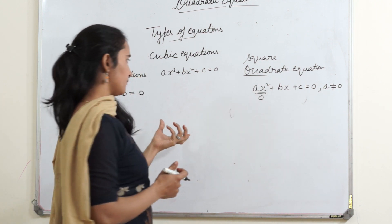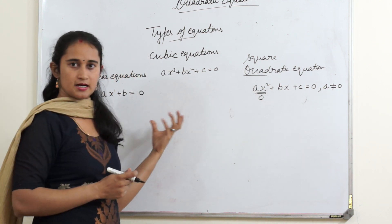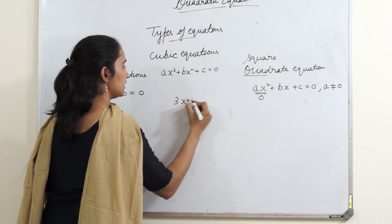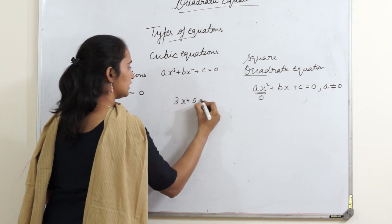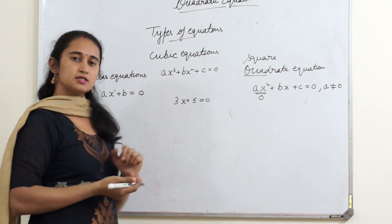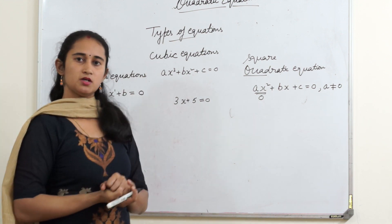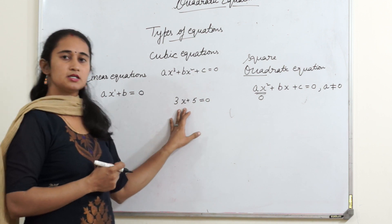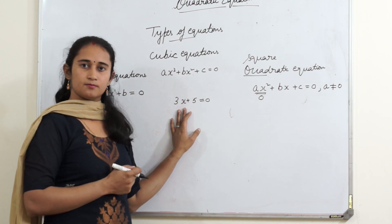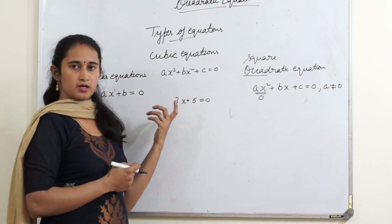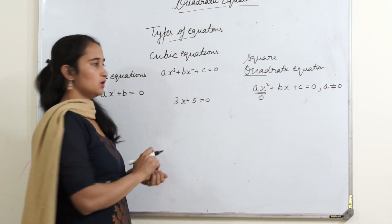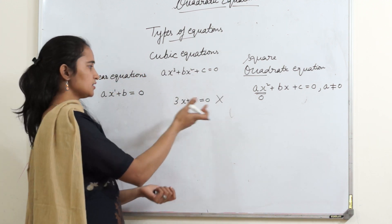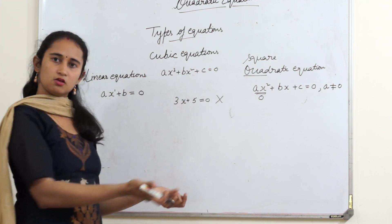Let's take some simple examples to understand this more. If I write 3x plus 5 equals to 0 — is it a quadratic equation? Look carefully: x has degree 1, there is no x squared. So no, this is not a quadratic equation. This is just a linear equation.